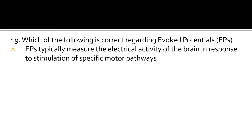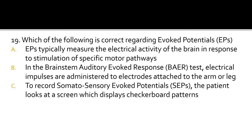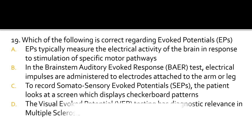Question 19. Which of the following is correct regarding evoked potentials? EPs typically measure the electrical activity of the brain in response to stimulation of specific motor pathways. In the brainstem auditory evoked response test, electrical impulses are administered to electrodes attached to the arm or leg. To record somatosensory evoked potentials, the patient looks at a screen which displays checkerboard patterns. The visual evoked potential testing has diagnostic relevance in multiple sclerosis.